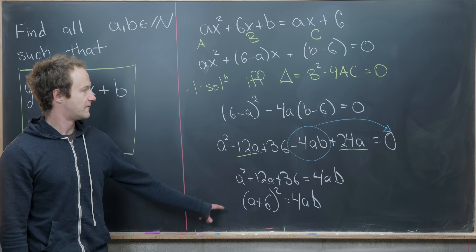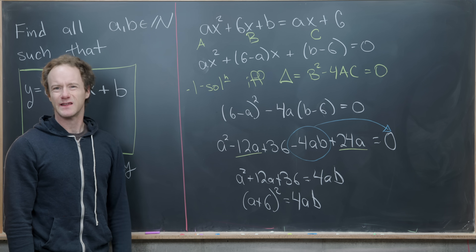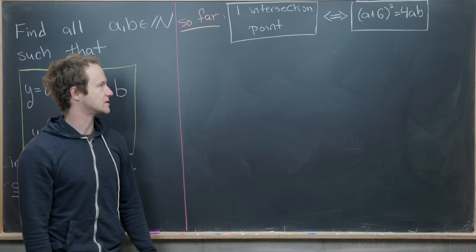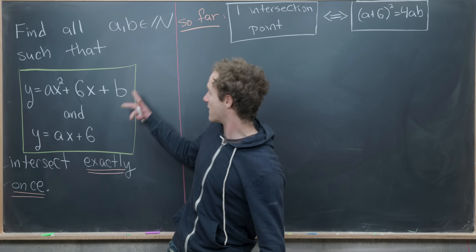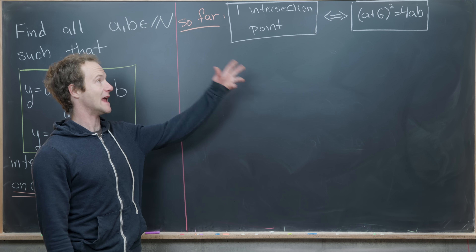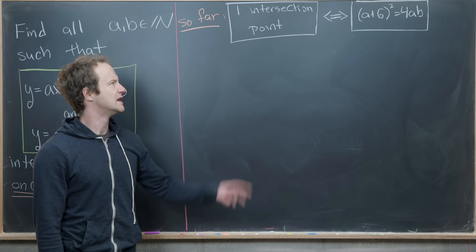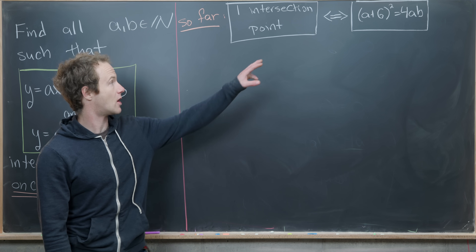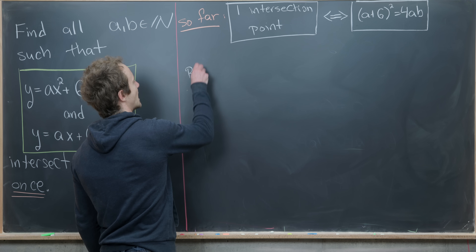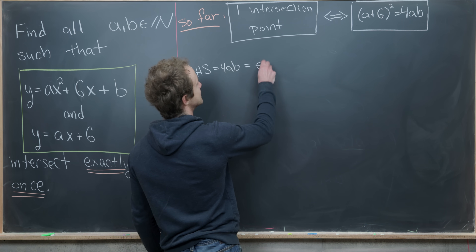This is the key equation we'll work with: (a + 6)² = 4ab. We've shown there is exactly one intersection point if and only if this holds. Now let's analyze it. The right-hand side, 4ab, is even.